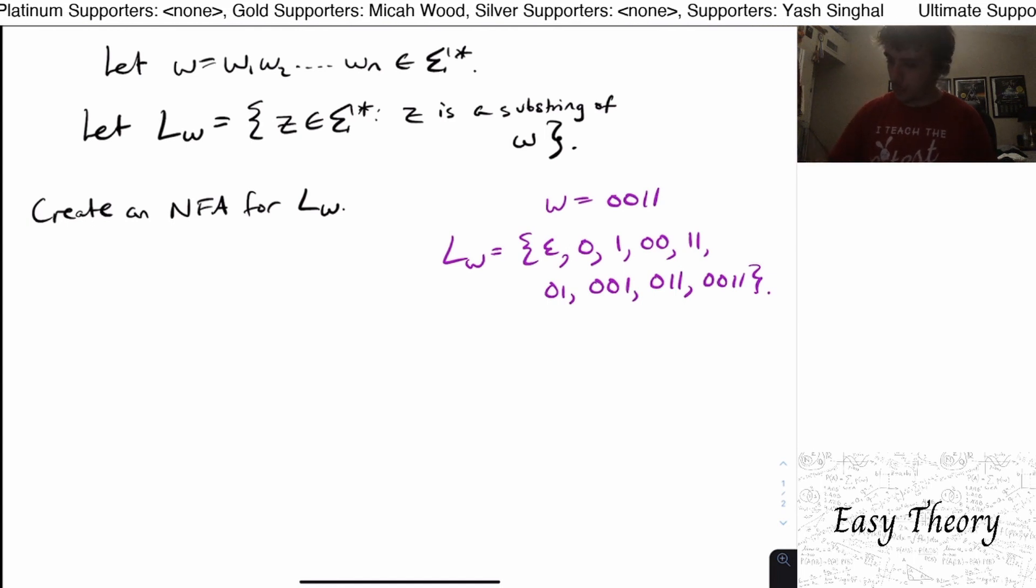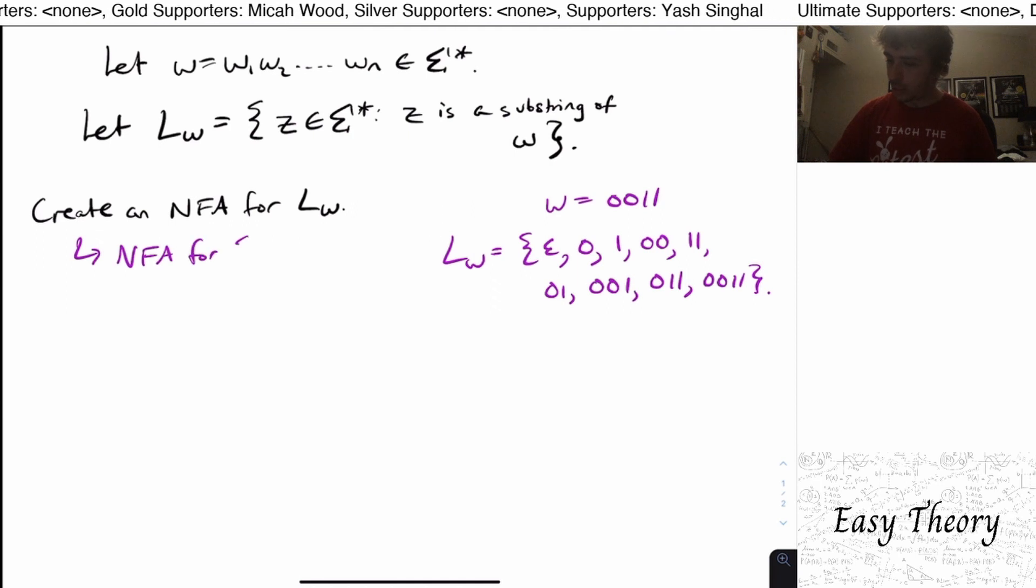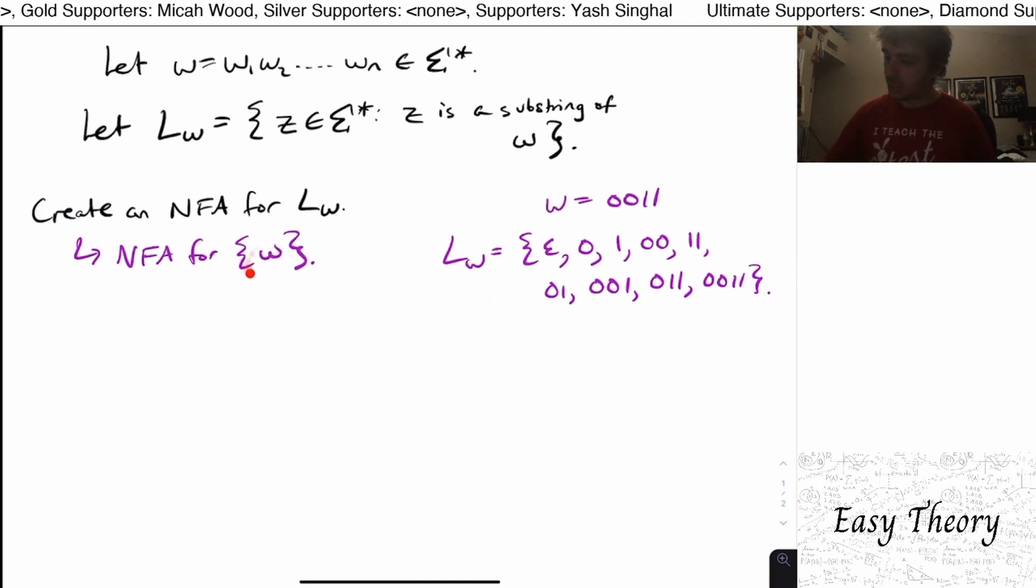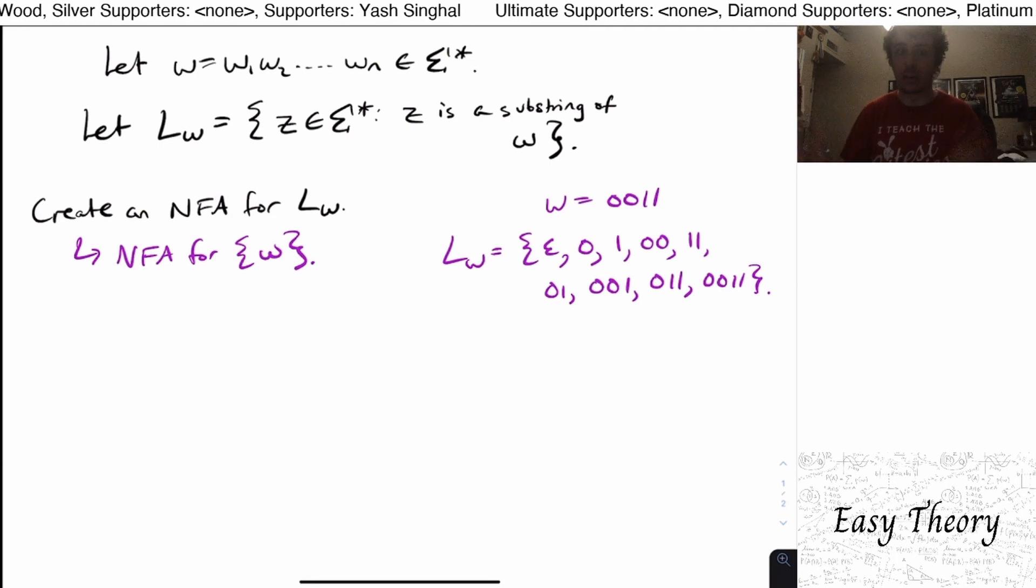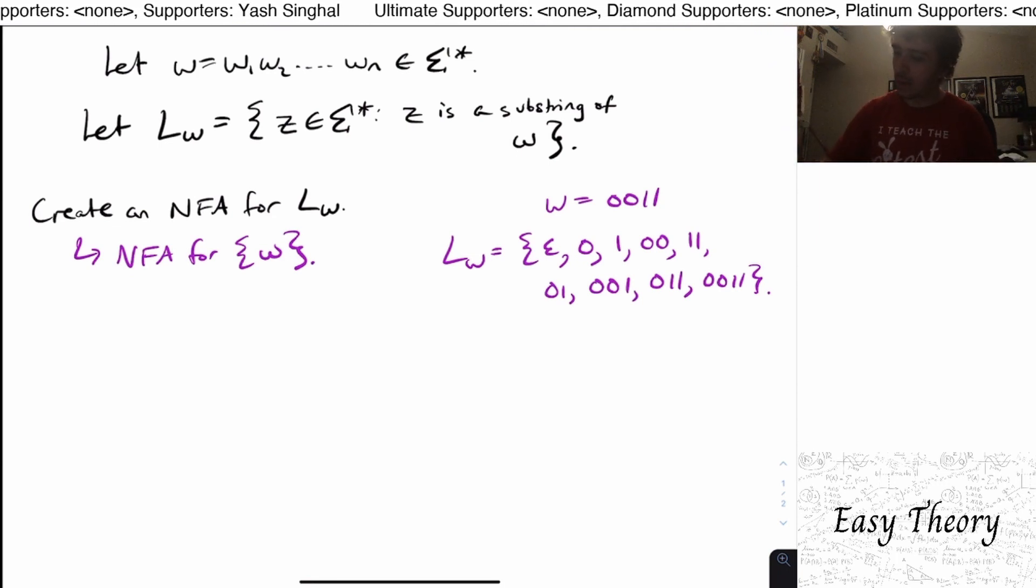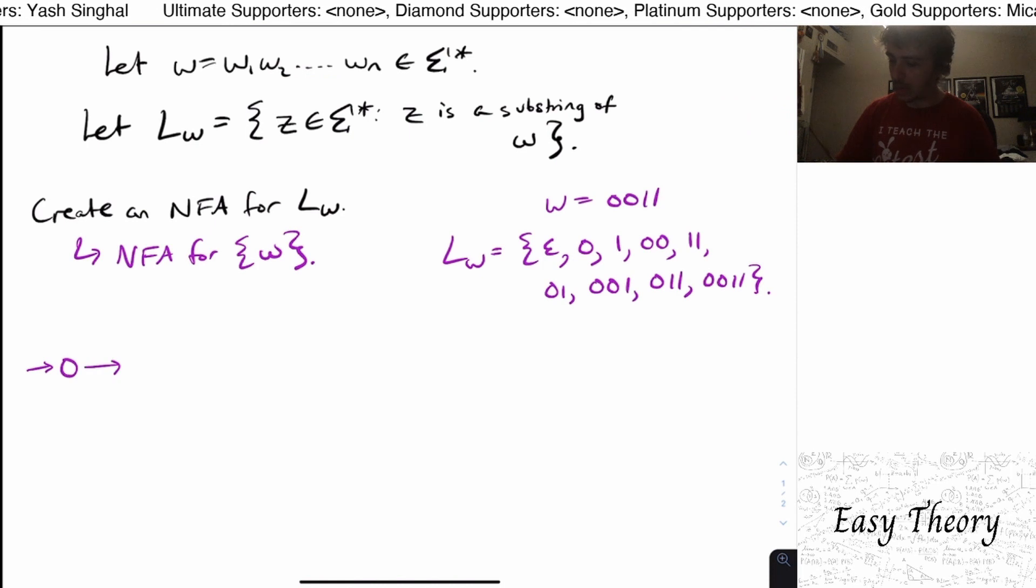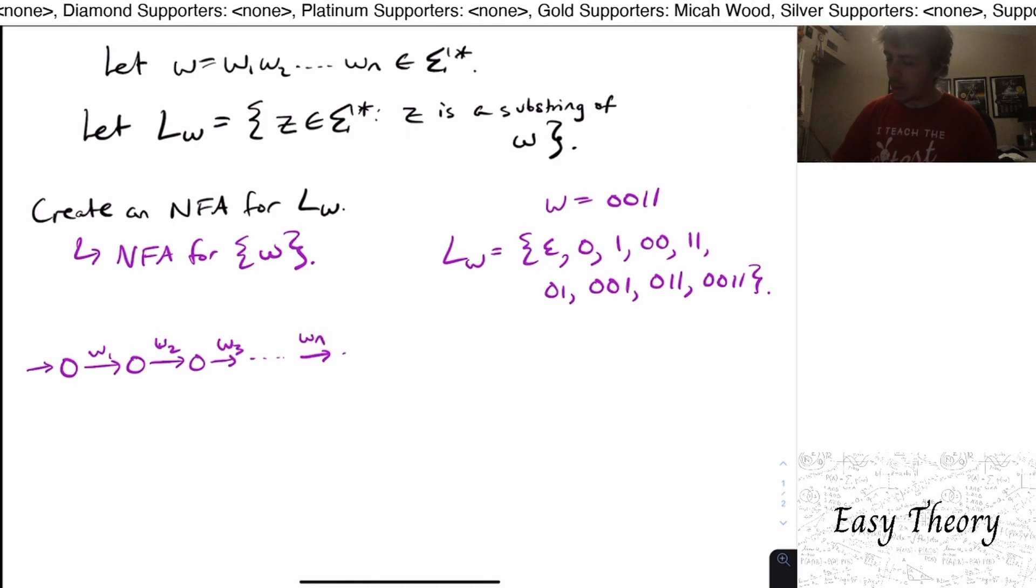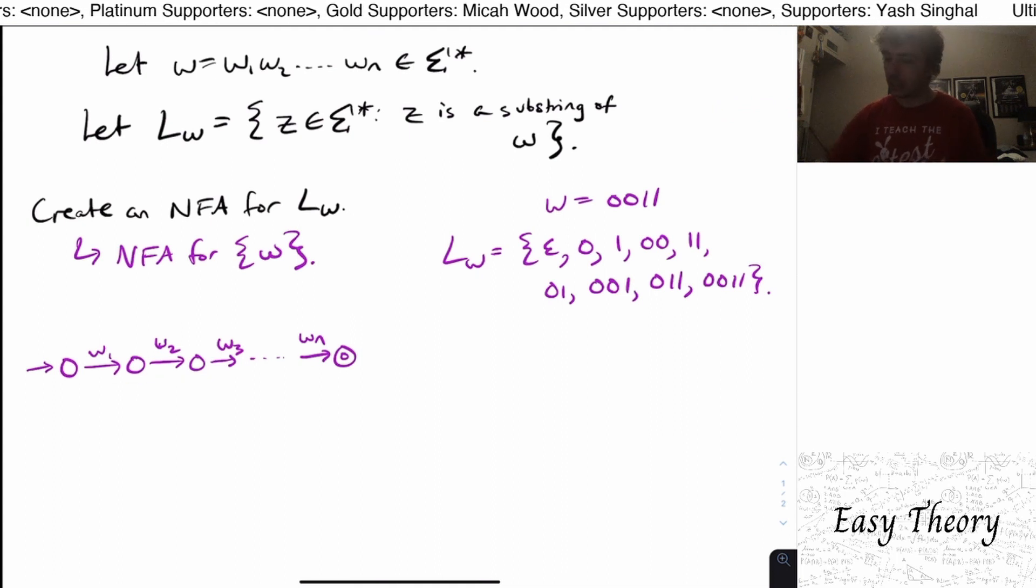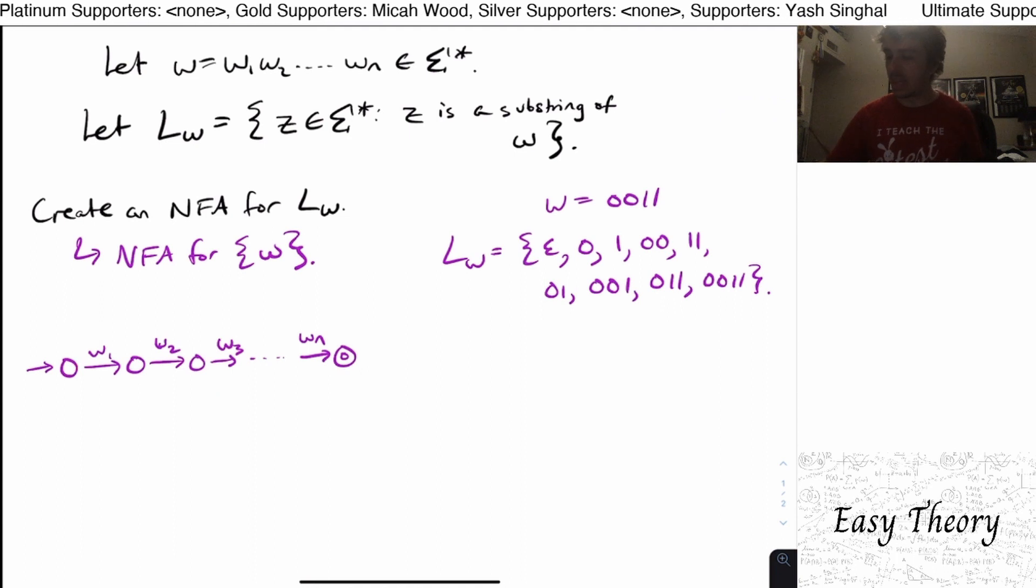So let's first make an NFA for just the language of w. Well, notice that w itself is in the set of substrings, because the substring could just be the entire whole string. So how can we achieve this? Well, if the characters of w are w1, w2, up to wn, what we could do is just make a simple NFA like this, where each of the transitions is going to be w1, w2, et cetera. So w3, then et cetera, up to wn. After that point, we're going to be in a final state. Nothing else is final, and there are no other transitions. So the only string you could ever accept is the one that is w1, w2, w3, up to wn, which is the original string itself.